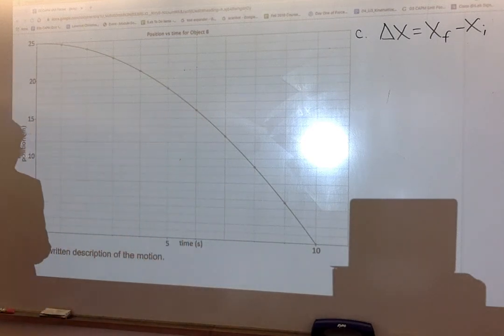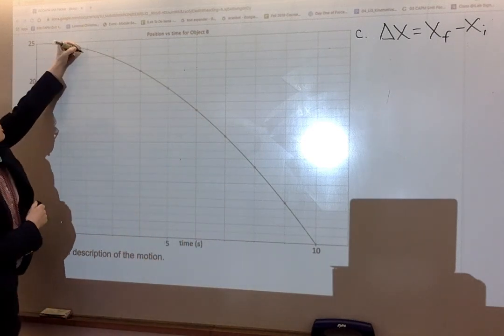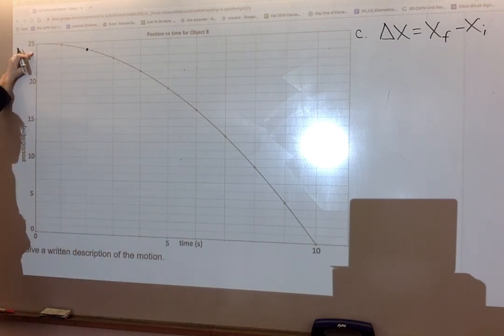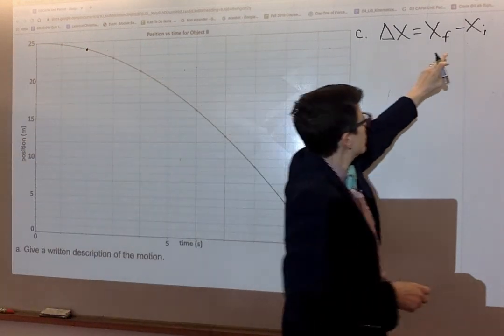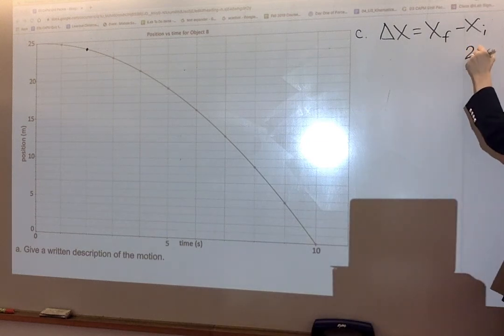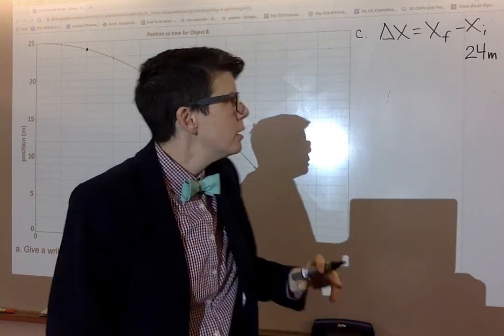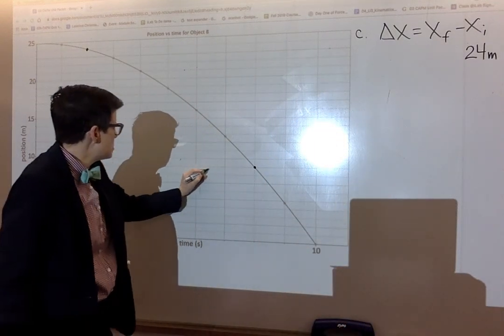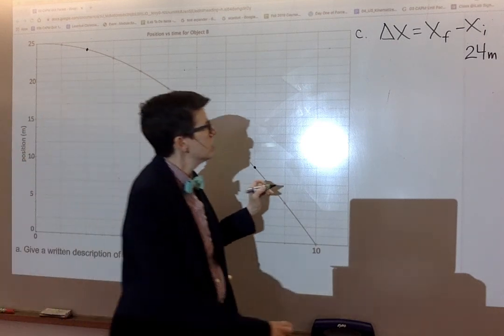At two seconds, the object is here. The object's position there is 24 meters. That's the initial position. At eight seconds, the object's position is nine meters.